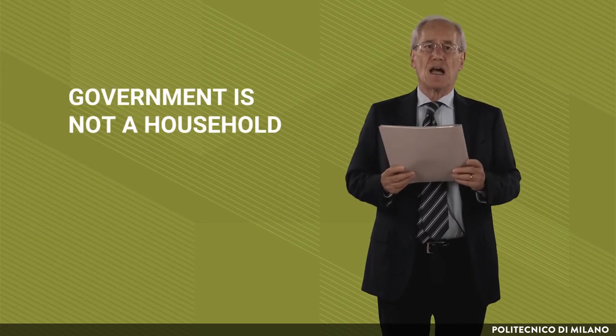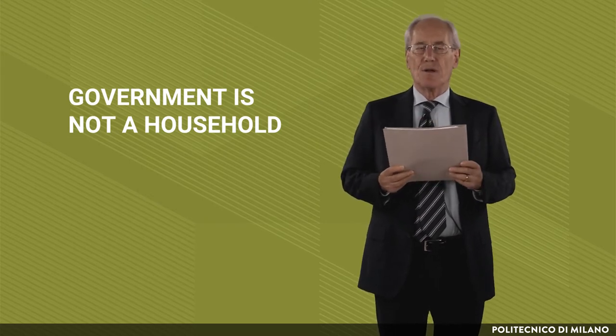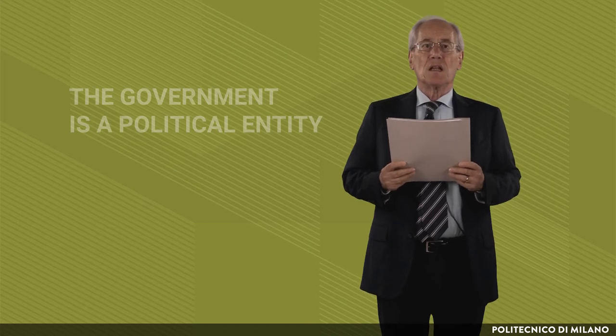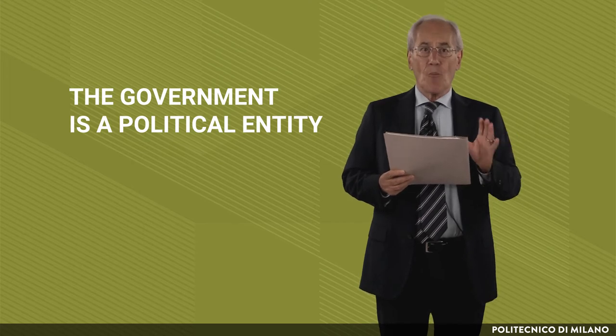Now who gives them this power? Well, we do — we give the government power to do this. Now, think about the government not as a household. Government is not a household; it appears to be like one, but it is not. First off, the government is a political entity. Whatever decision a government takes is political in nature. Political means it is a choice. We will not issue any value judgment about what governments do.